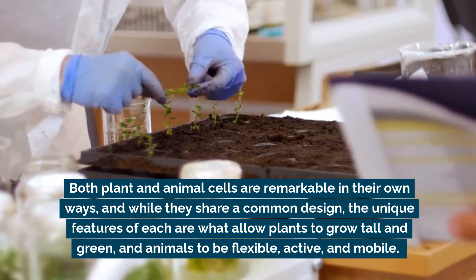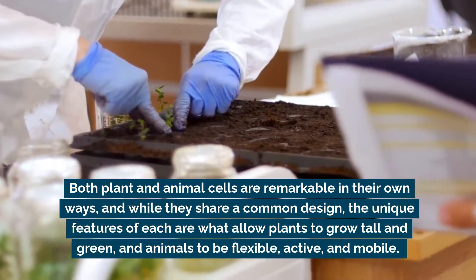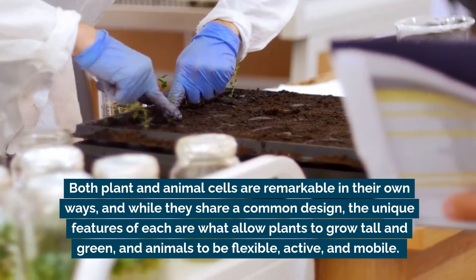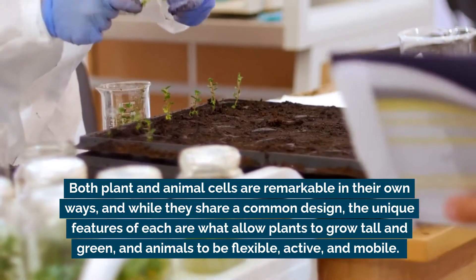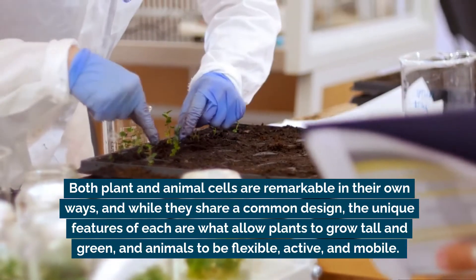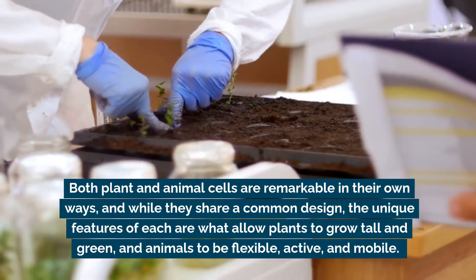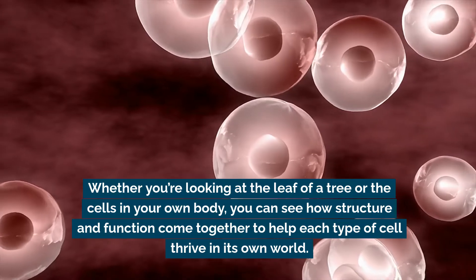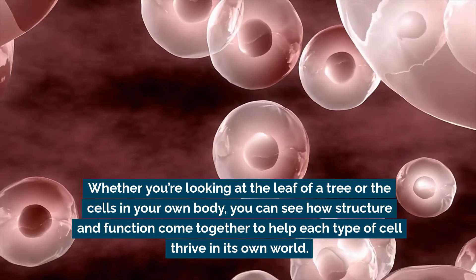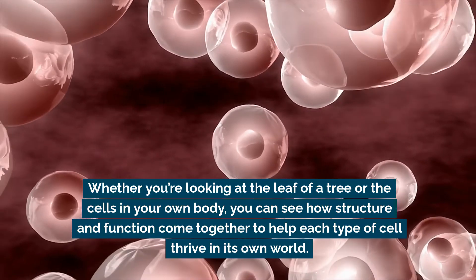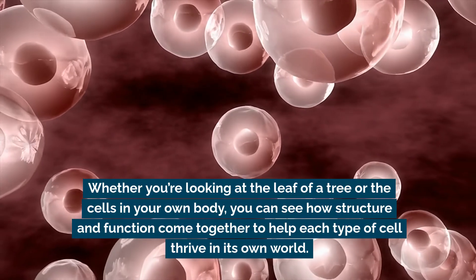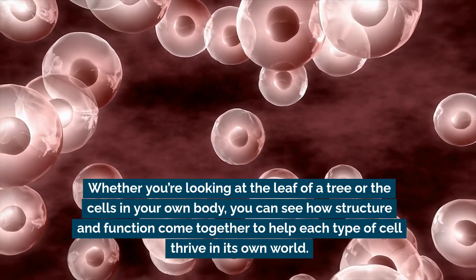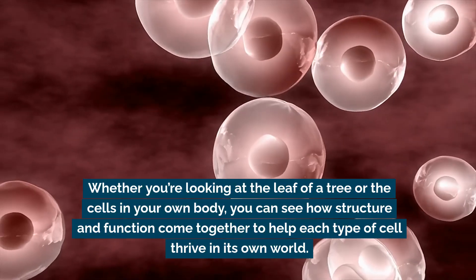Both plant and animal cells are remarkable in their own ways, and while they share a common design, the unique features of each are what allow plants to grow tall and green, and animals to be flexible, active, and mobile. Whether you're looking at the leaf of a tree or the cells in your own body, you can see how structure and function come together to help each type of cell thrive in its own world.